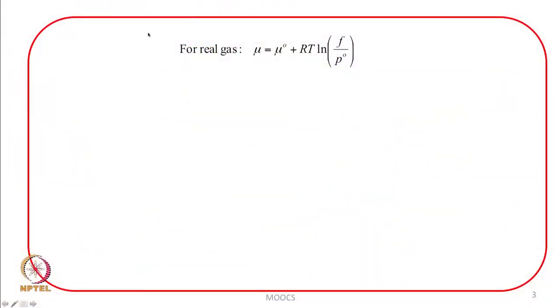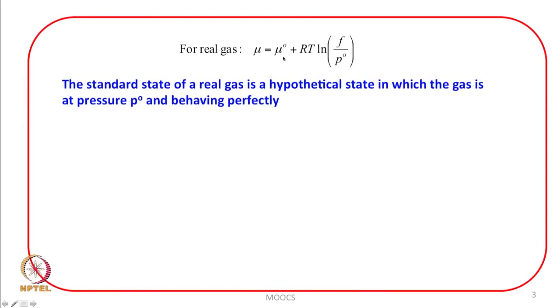For a real gas, the chemical potential is equal to mu° + RT log(F/P°), where mu° here is a hypothetical standard state. The standard state of a real gas is a hypothetical state in which the gas is at pressure P° and behaving perfectly. So for real gases, the normalized reference standard state is a hypothetical state where the gas behaves perfectly and the pressure equals P° = 1 bar.